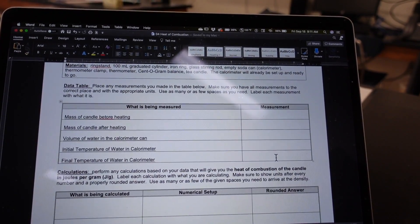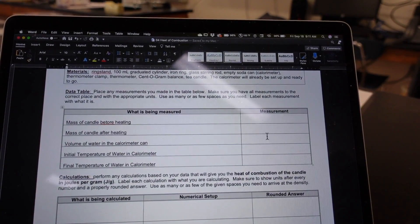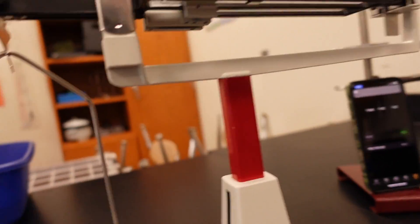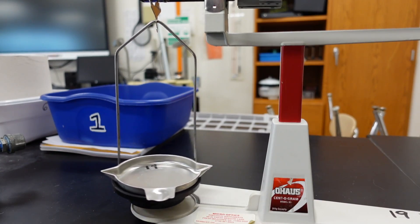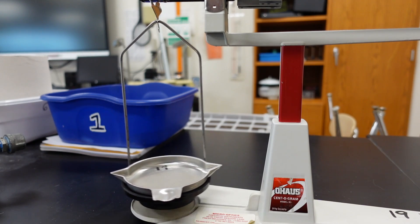Okay, and then you'll take that final temperature and place it where it says final temperature of water in the calorimeter. Now the only other piece of data we have to get is the mass of candle after heating. So let's take care of that so we don't spill any of our candle wax.